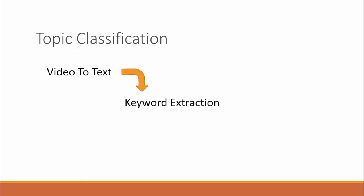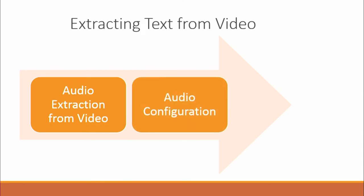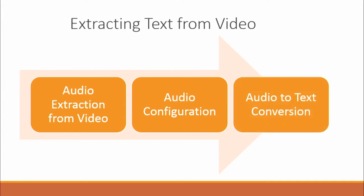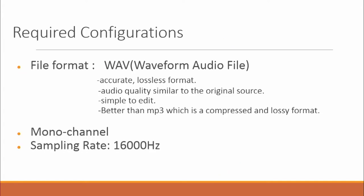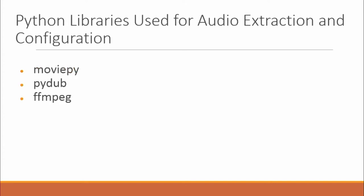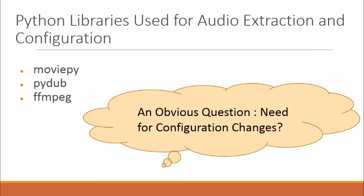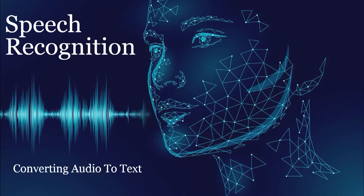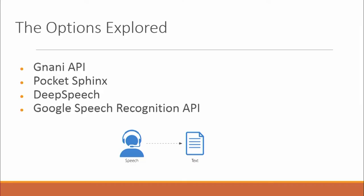Another major part was topic classification, which dealt with three phases: video to text, extracting keywords from the text obtained, and topic classification to classify the topic of the questioner. Extracting text from video was done in three steps: audio extraction from video, making necessary configuration changes to audio files, and audio-to-text conversion. The required file format was WAV — mono channel with a sampling rate of 16,000 Hz. The conversion and configuration changes were carried out using Python libraries: MoviePy, PyDub, and FFmpeg. These changes were necessary because the user won't record video in the format we require.